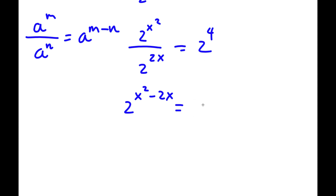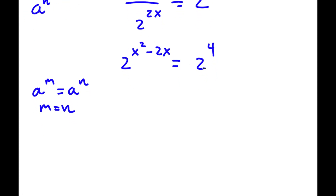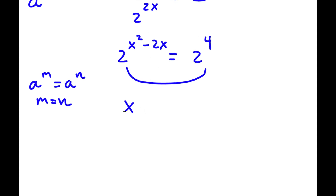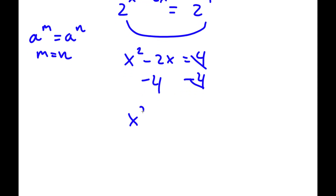Now this equals 2 to the power of 4. Since both bases are the same, the exponents must be equal: x squared minus 2x equals 4. To solve this, I subtract 4 from both sides, giving x squared minus 2x minus 4 equals 0. As you can see, I now have a quadratic equation.